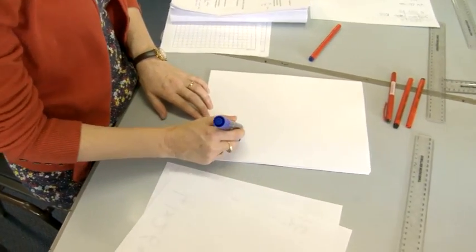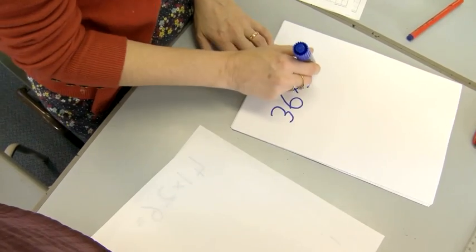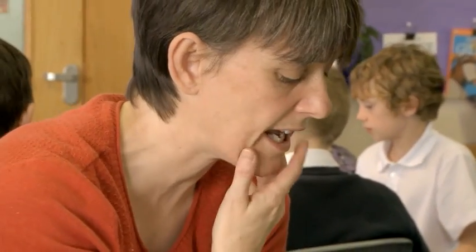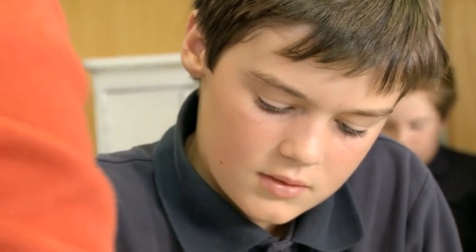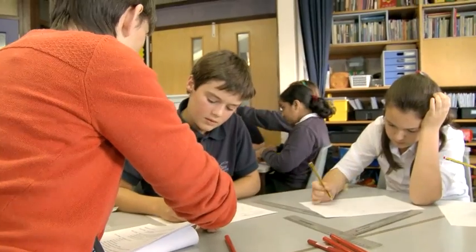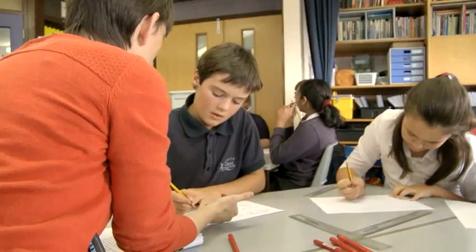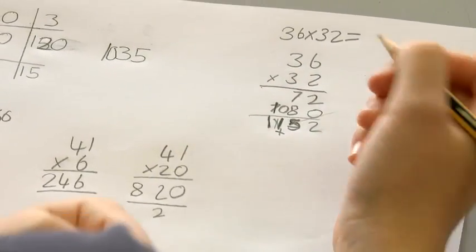I'm going to give you another one: 36 multiplied by 32. So what might you do first here? 2 times 36. Do that then — just forget about this for the moment and just do the 2 times 36. So now you've done 2 lots of 36, you've multiplied 36 by 2. Now what are you going to do? 36 times 30. Because 3 thirties is 900 and you had another 100 which makes 1,000. So what do you make it altogether? 1,152.